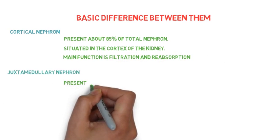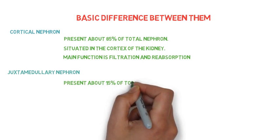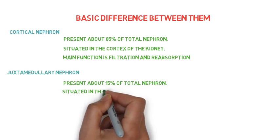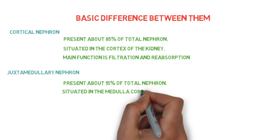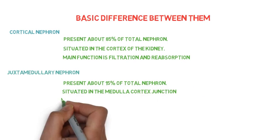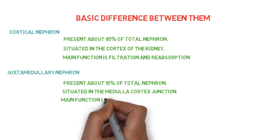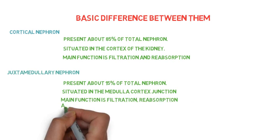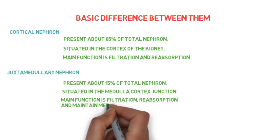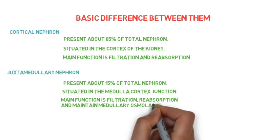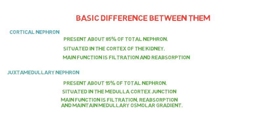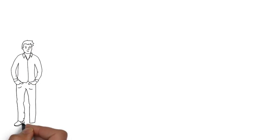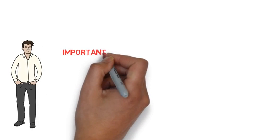The juxtamedullary nephron is present in about 15% of total nephrons. The main function of this nephron is filtration, reabsorption, and maintaining the medullary osmolar gradient.